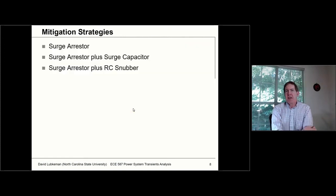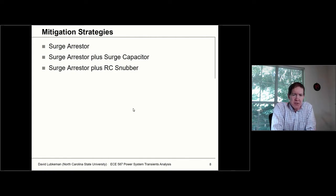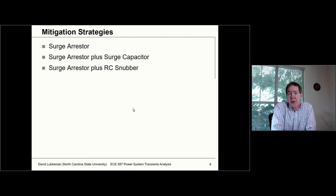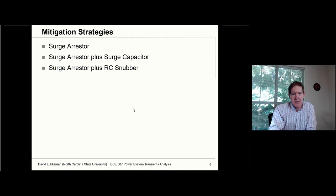As far as mitigation — we'll get into this later this semester — you could put a surge arrestor there, which would tend to clamp those overvoltages. There are combinations where you could use the surge arrestor with something else, like what we call a surge capacitor or an RC snubber. Basically what we'd try to do is reduce that voltage peak. But that's a topic for later on.